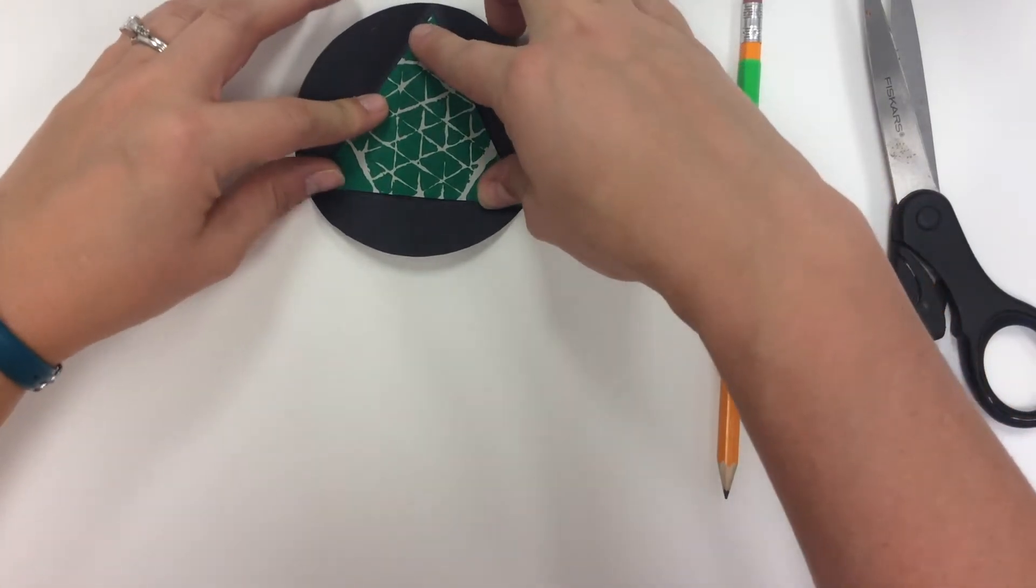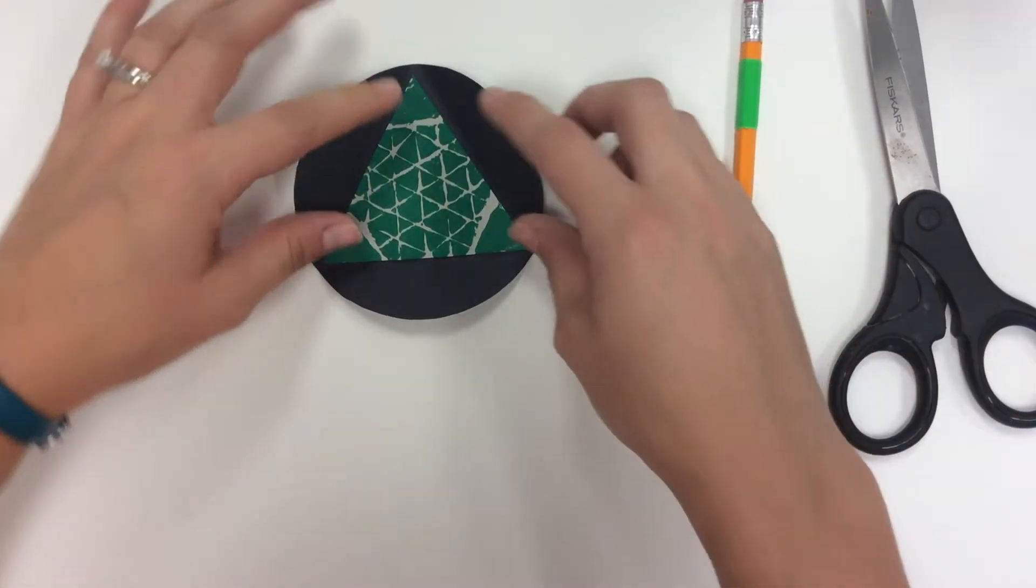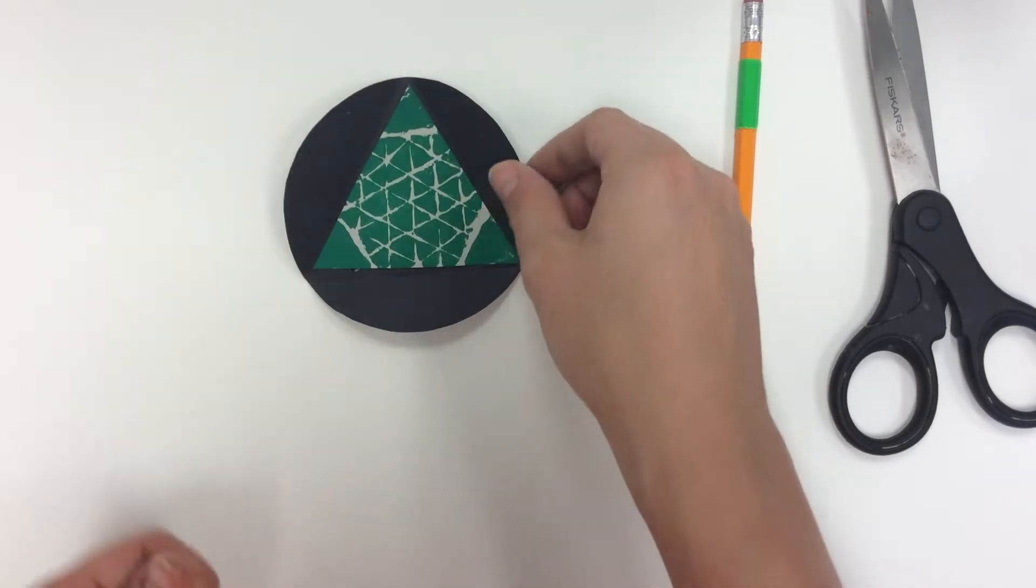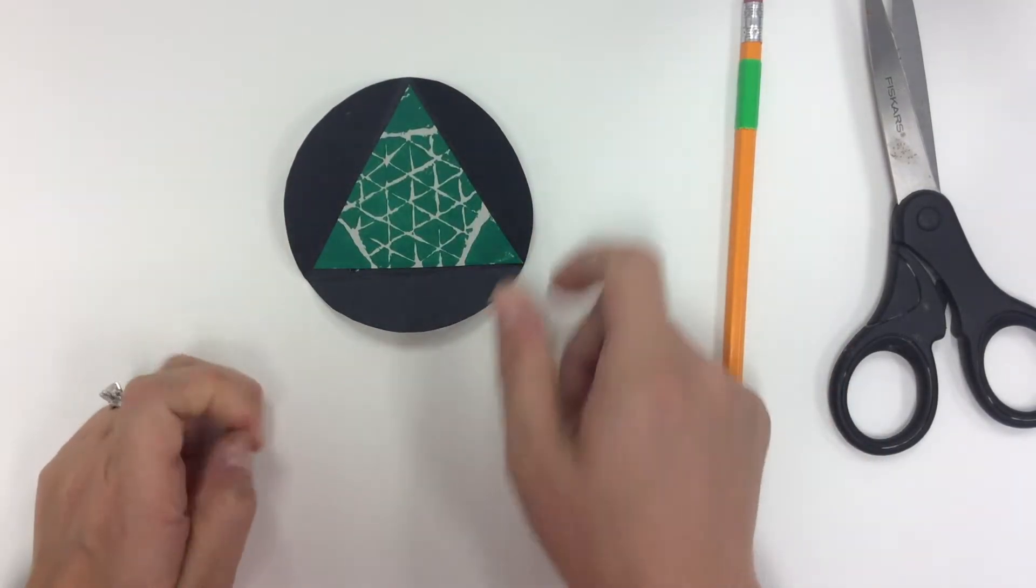I center it in my triangle and carefully press it into place. Then I'm going to set it off to the side to let the glue dry.